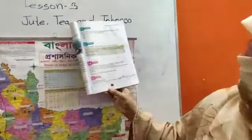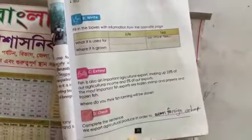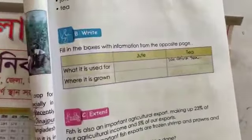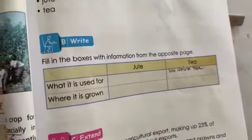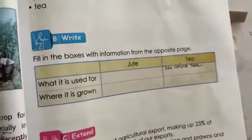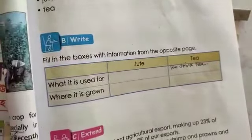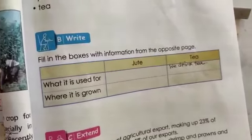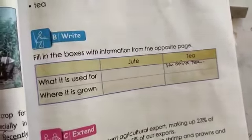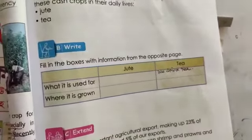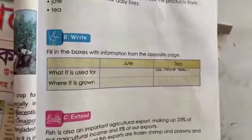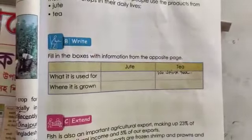Now my dear students, come to page number 35. In section B we can see a table. You must fill it up. First column is what it is used for. Jute: by jute we can make carpet, rope, sacks, bags, and many things. For tea, generally we drink tea, but for preservation and other purposes also we can use tea. Where is it grown? Already I told.